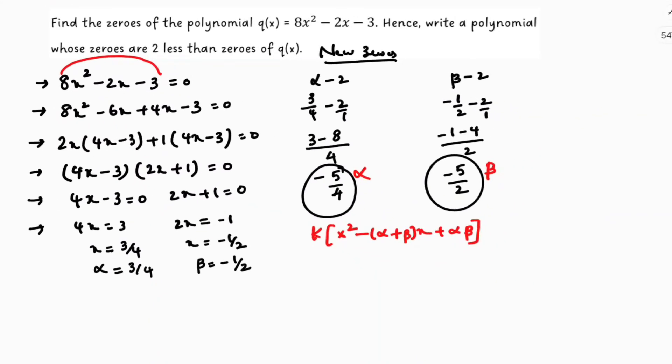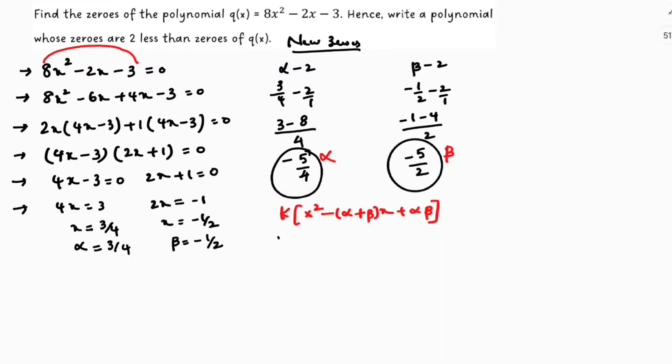Here k into x² minus, alpha is minus 5 by 4, beta is minus 5 by 2. So next step: k times x² minus, here LCM is 4, here it is 2, so I need to multiply by 2. So it will become minus 10 plus minus into minus plus 25 by 8.